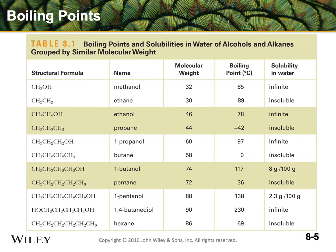Let's compare the first band in the yellow and white section. We have methanol and ethane. They have approximately the same molecular weight, but the ethanol has the OH group allowing it to hydrogen bond to nearby molecules. The first thing we notice is the boiling point goes way up — over 150 degrees higher boiling point for the methanol than for the ethane, even though they're the same molecular weight.